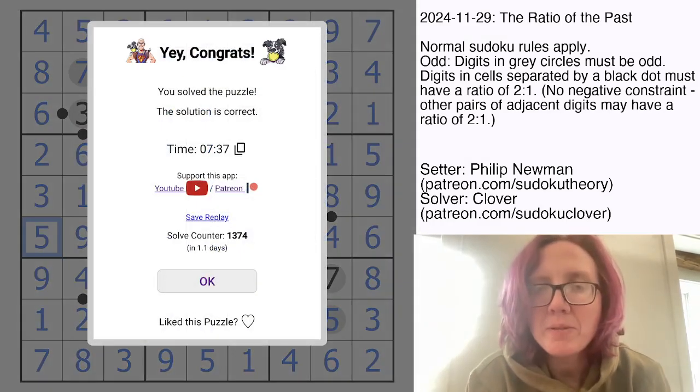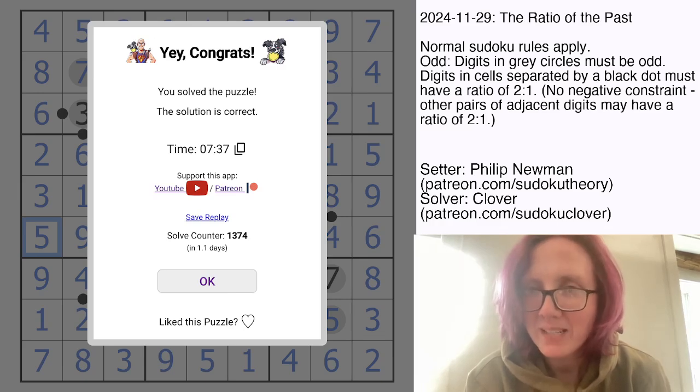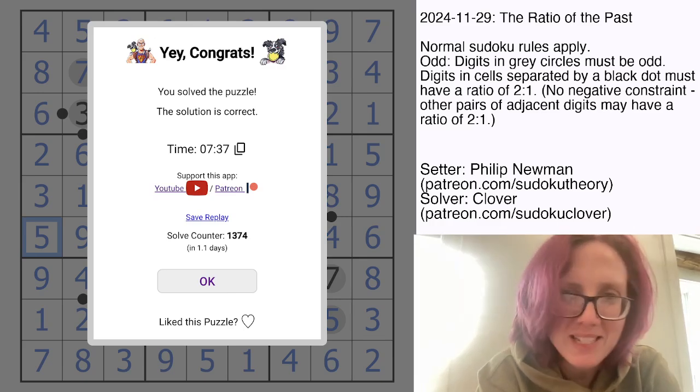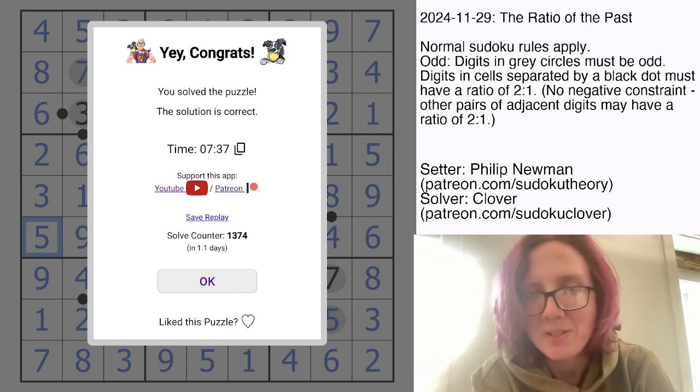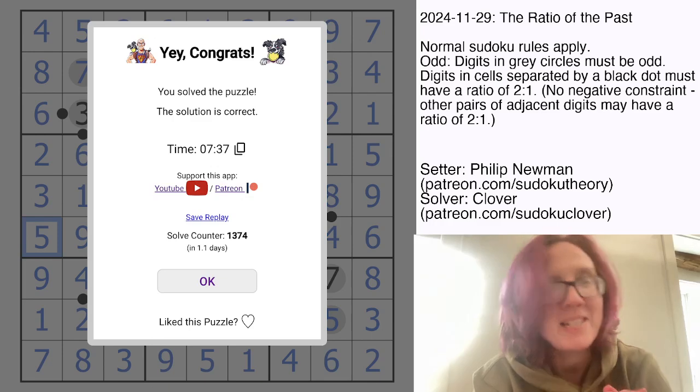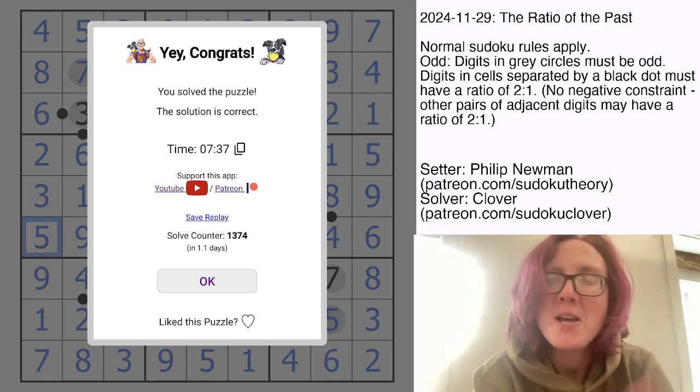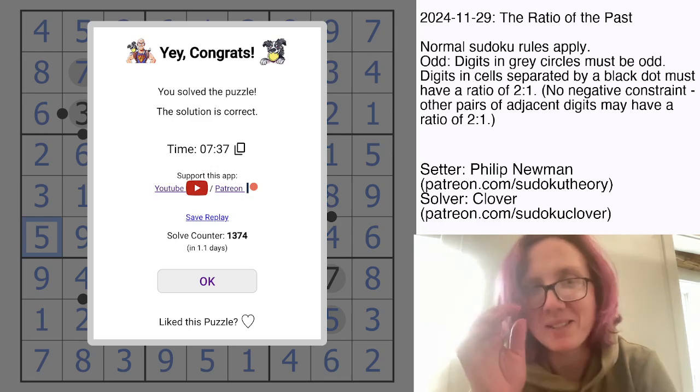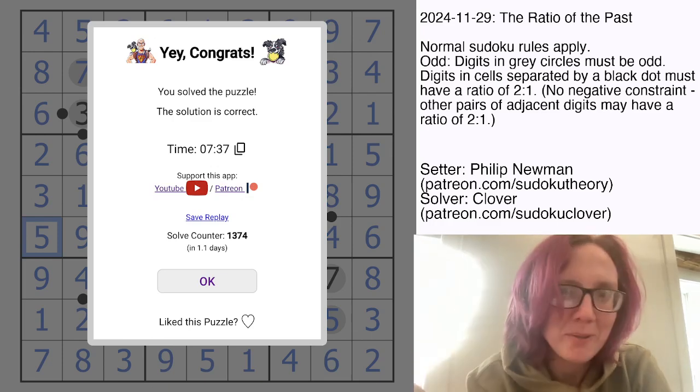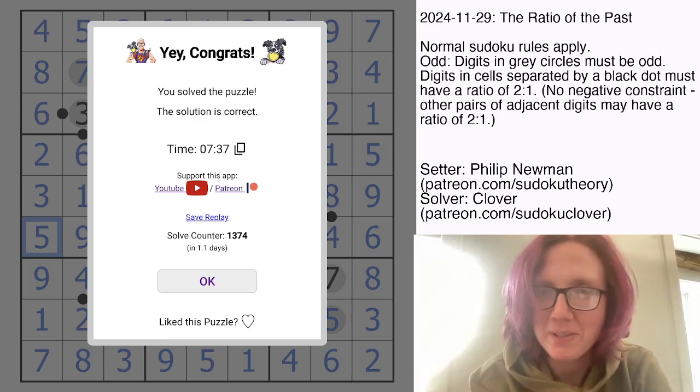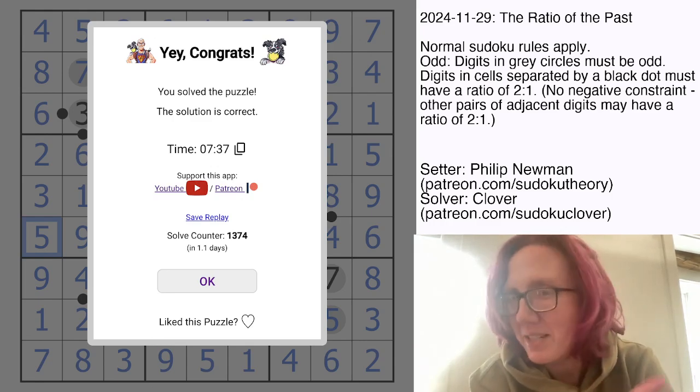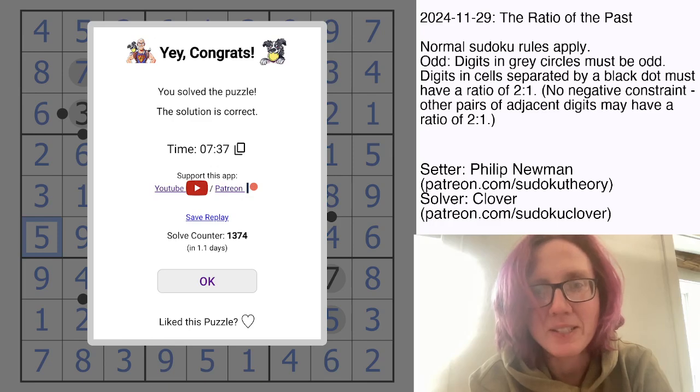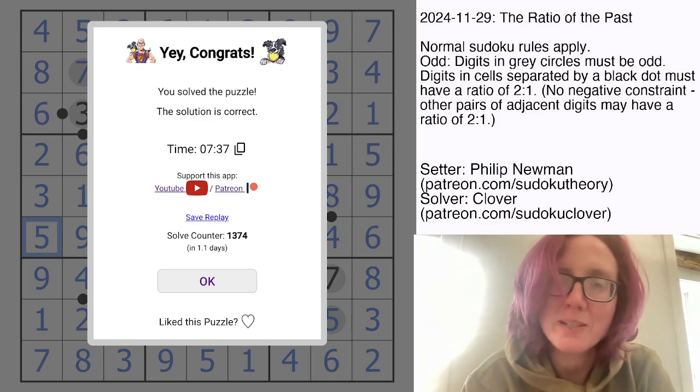And that is how you solve Philip Newman's The Ratio of the Past. I like that one. I like when Philip does these series of two or even more than two puzzles that kind of go back and revisit a theme from a previous puzzle. In this case, we've revisited his even consecutive pairs from a couple days ago with an odd ratio pairs puzzle that kind of has an echo of the visual theme of the previous one. I really enjoyed that. Hope you did as well. If you want to check it out yourself, the link to solve it is in the description below this video. I will see you in three days.